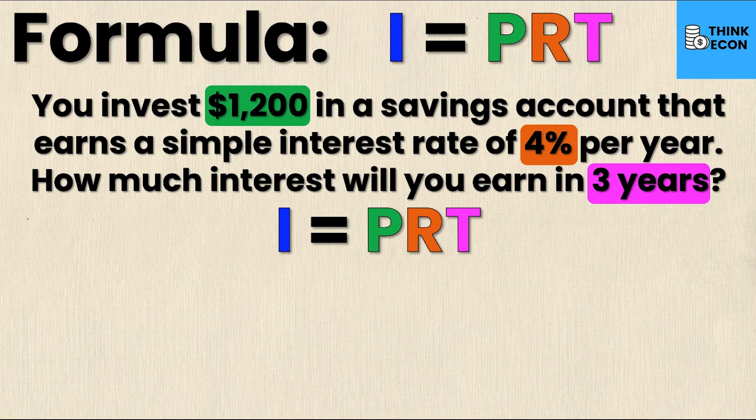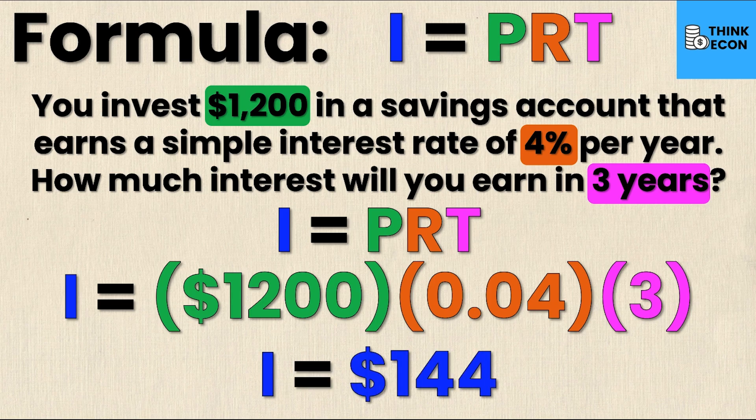Substituting in, I get: interest equals $1,200 — my principal — times 0.04 (that's 4% as a decimal, so 4 divided by 100) times 3. Simplifying, the interest is $144. This means that in three years at a simple interest rate of 4%, I will have earned an additional $144 on top of the $1,200 I originally invested — and that is my interest.